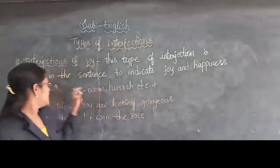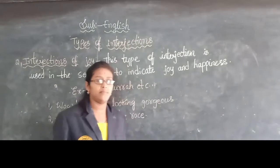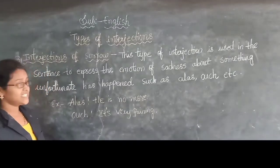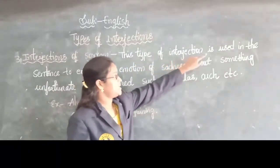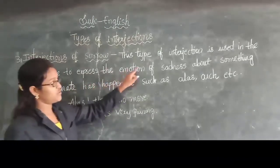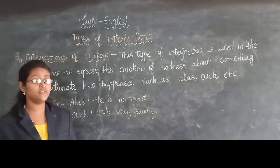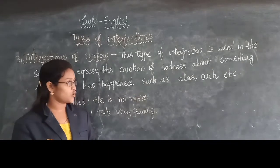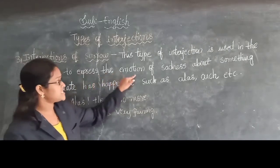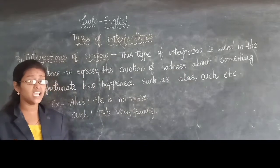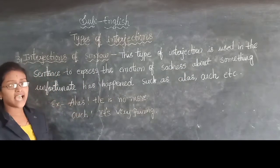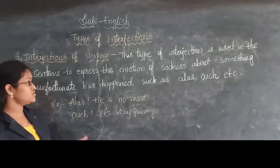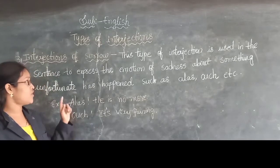This type of interjection is used in the sentence to indicate joy and happiness. Now we are going to learn about interjections of sorrow. This type of interjection is used in the sentence to express the emotion of sadness. Whenever we hear bad news, how do we feel? We feel very sad and sorrowful. So for that type of sentence, we use interjections of sorrow.